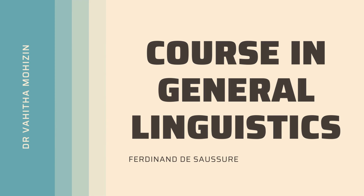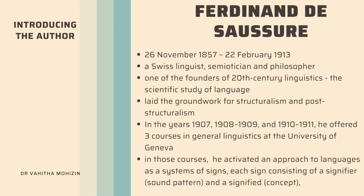Our topic is Ferdinand de Saussure's Course in General Linguistics. Being a Swiss linguist, Ferdinand de Saussure is identified as one of the founders of 20th century linguistics — the scientific study of language. He is the one who laid the groundwork for structuralism and post-structuralism. In the years 1907, 1908 to 1909, and 1910 to 1911, he offered three courses in general linguistics at the University of Geneva.